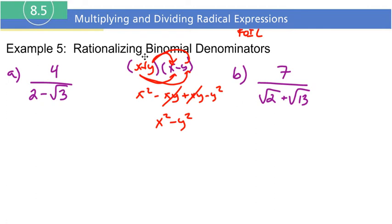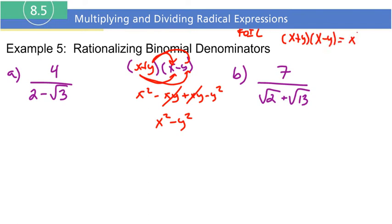Look at what we have left: x squared minus y squared. Notice: if you do x plus y times x minus y, you take the first term x and square it, then minus, take the second term y and square it. So when multiplying conjugates, really all we're going to do is take the first term and square it, then take the second term and square it. I'll write that here: x plus y times x minus y equals x squared minus y squared.